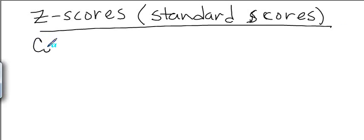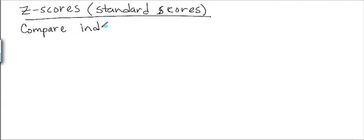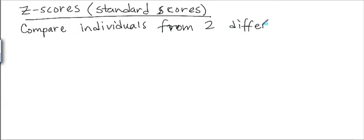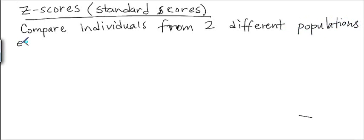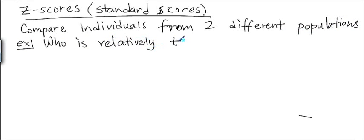What I want to do is compare individuals from two different populations. For example, I can ask the question: who is relatively taller — Shaquille O'Neal or President Lyndon B. Johnson?